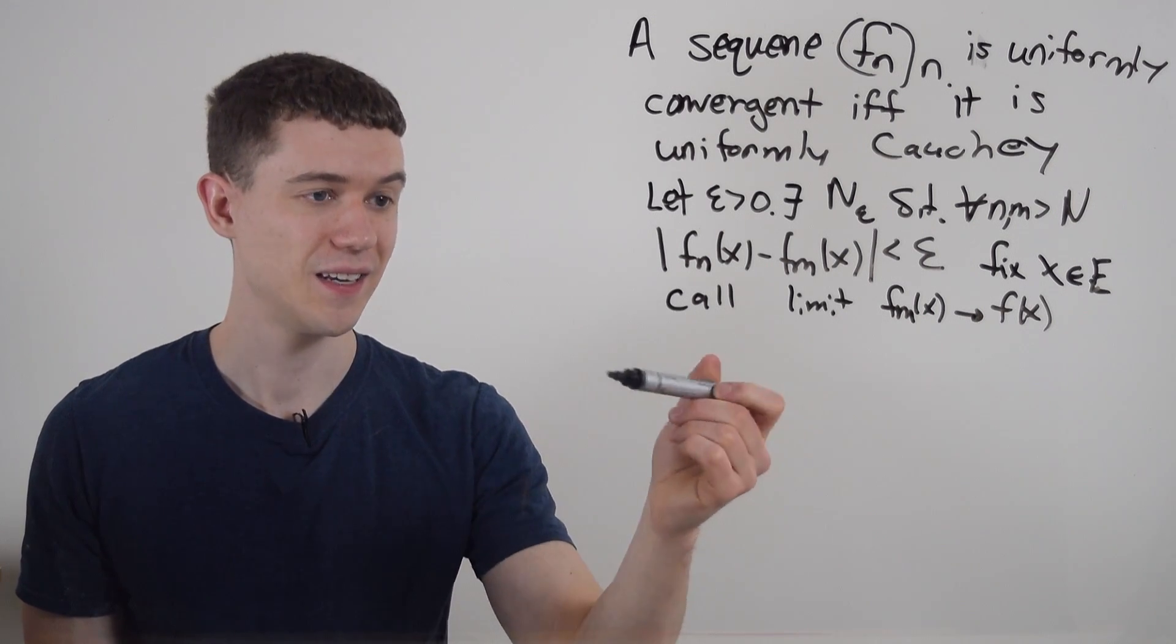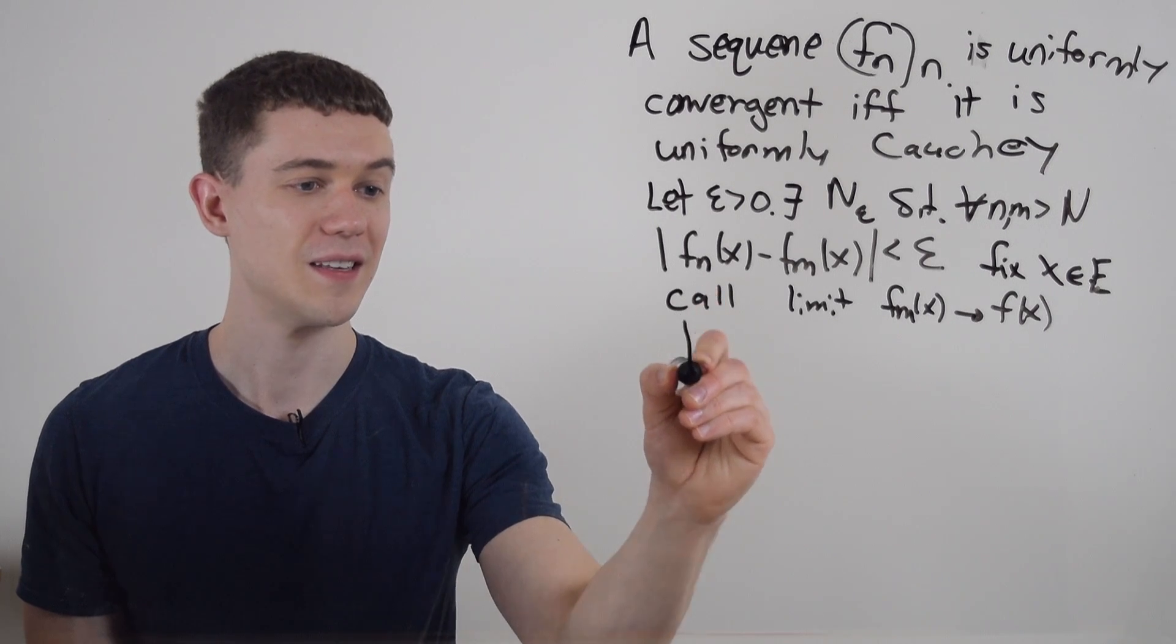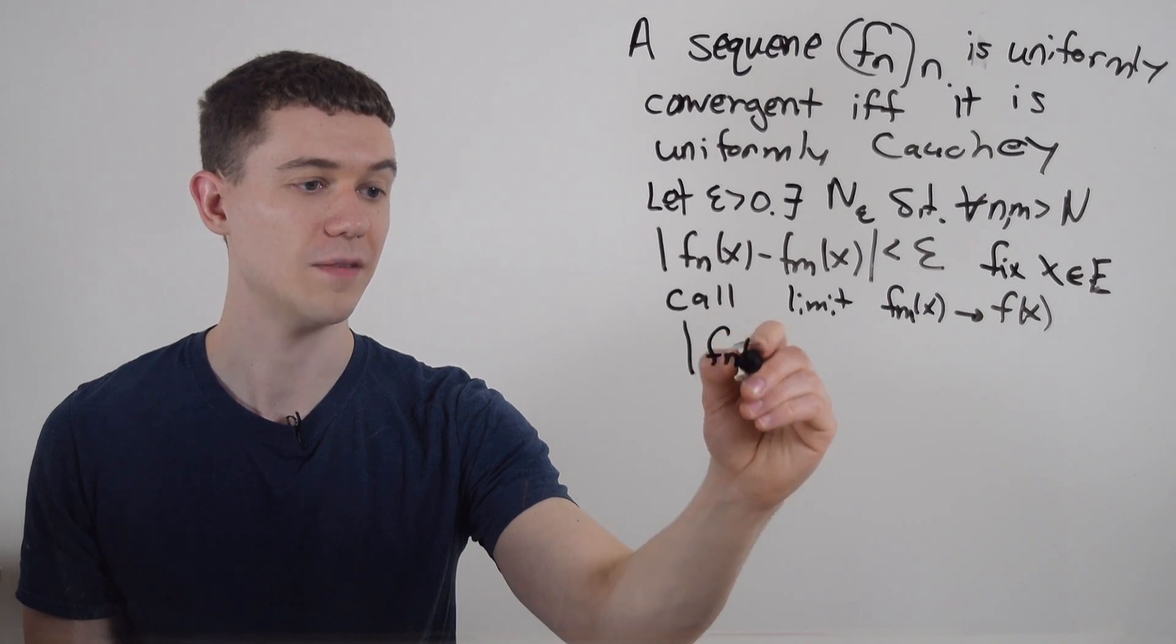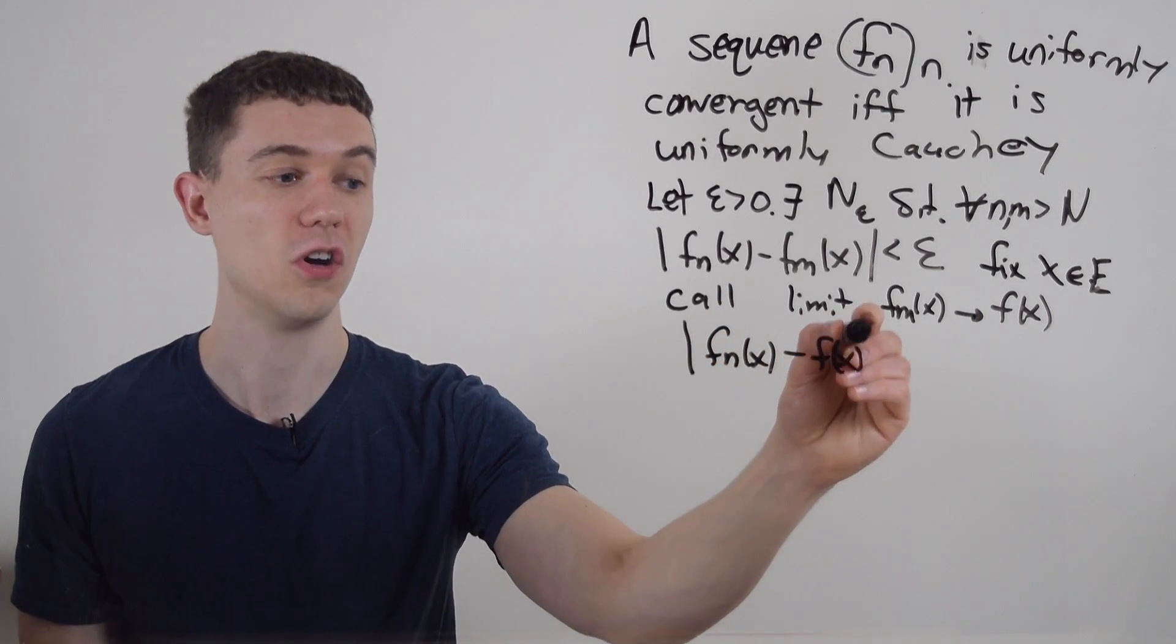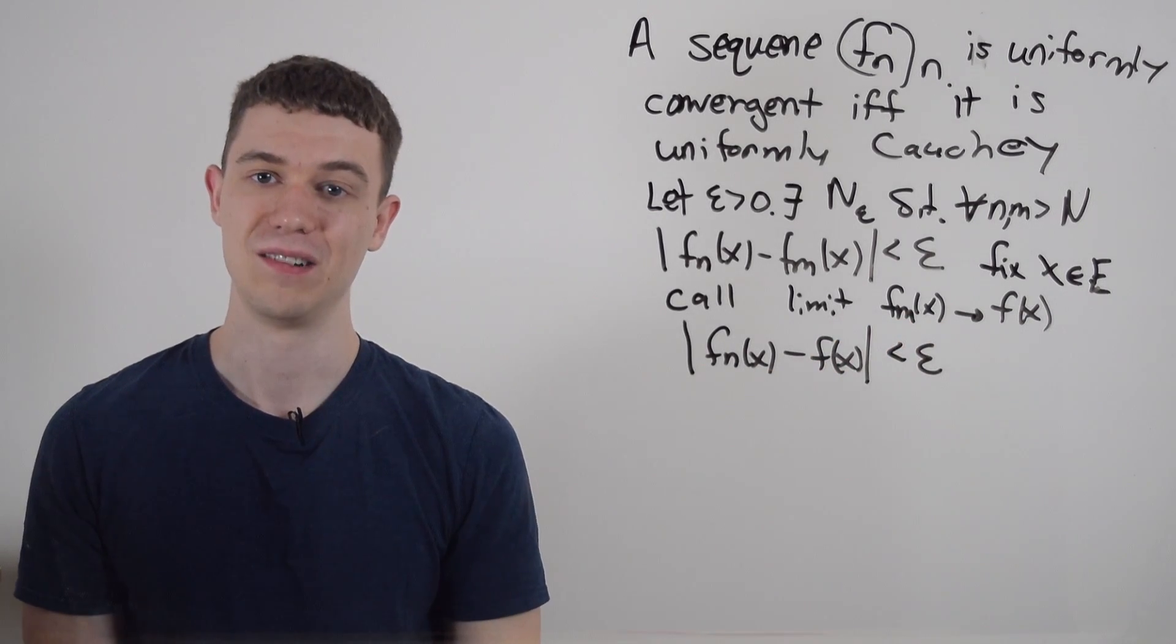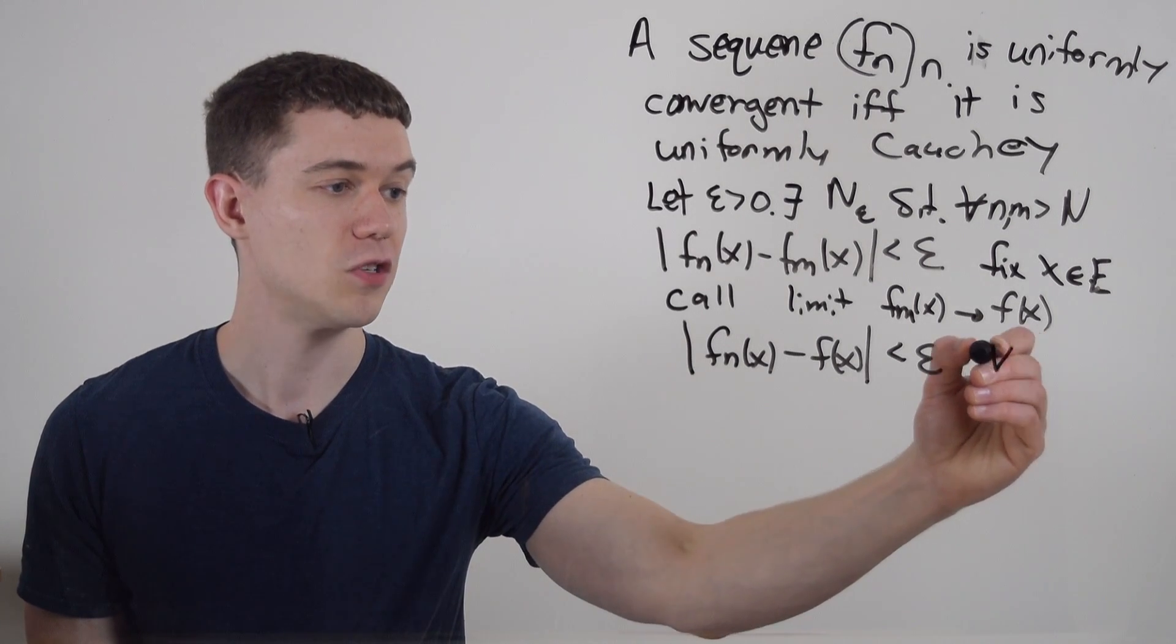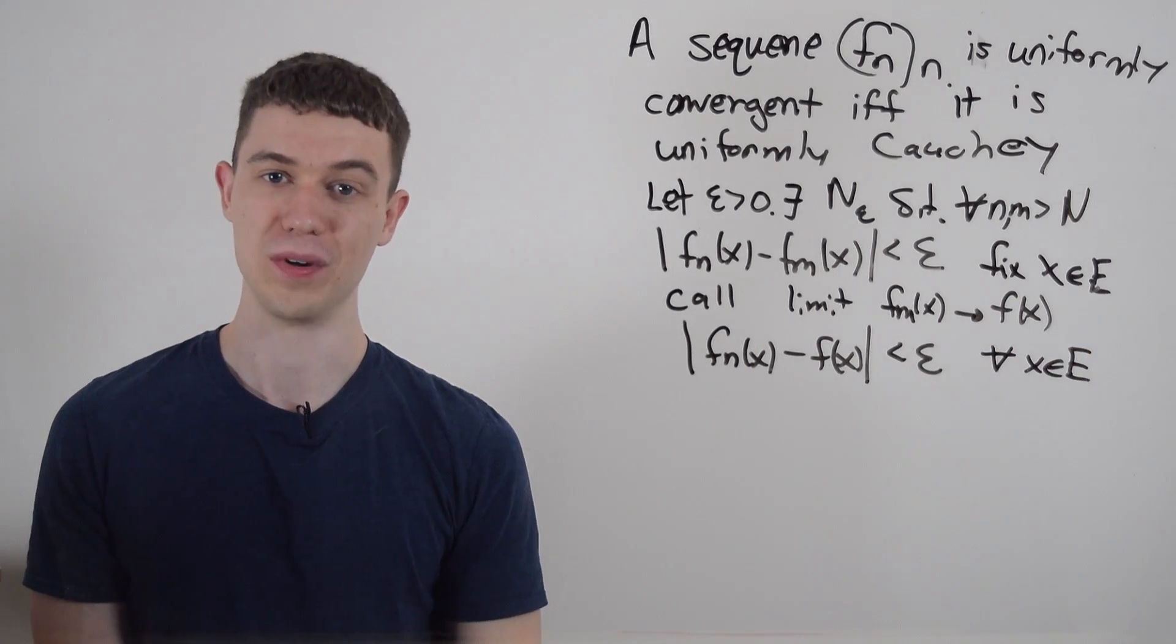And what this means, since f sub n and f sub m have the same limit, since it converges, I know that there exists some N for all epsilon greater than zero, such that the difference between f sub n minus its limit, which I've just called f of x, is less than epsilon. This is what it means for a sequence to converge. But this was true for arbitrary x in E. I could have fixed any old point.